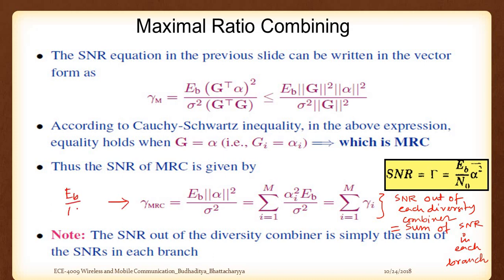Gamma_MRC is given as E_b by N_0 times alpha squared. Alpha is a complex variable, and when you sum all the alpha_i values - alpha_1, alpha_2, alpha_3 - for each branch, it indicates we are taking into account all the alphas and their real components. When the summation comes in, it again becomes alpha_i as I varies between 1 to M. The detailed calculation is given in the notes. The SNR out of each diversity combiner is simply the sum of SNR in each branch.